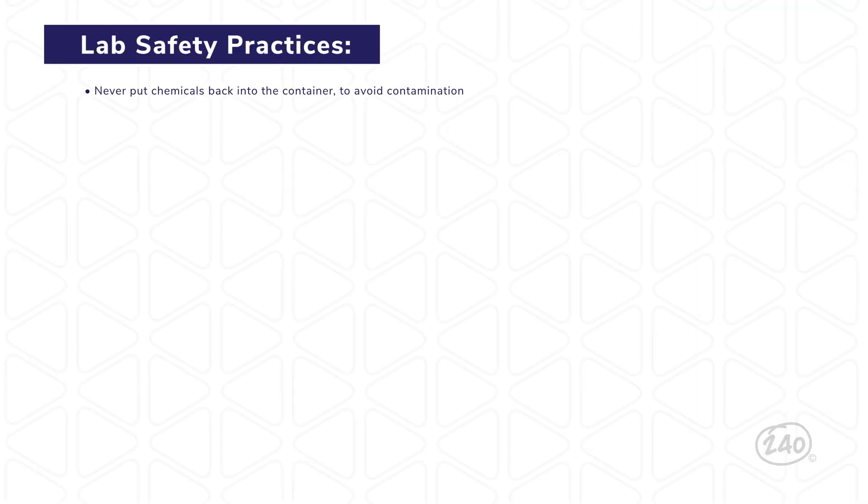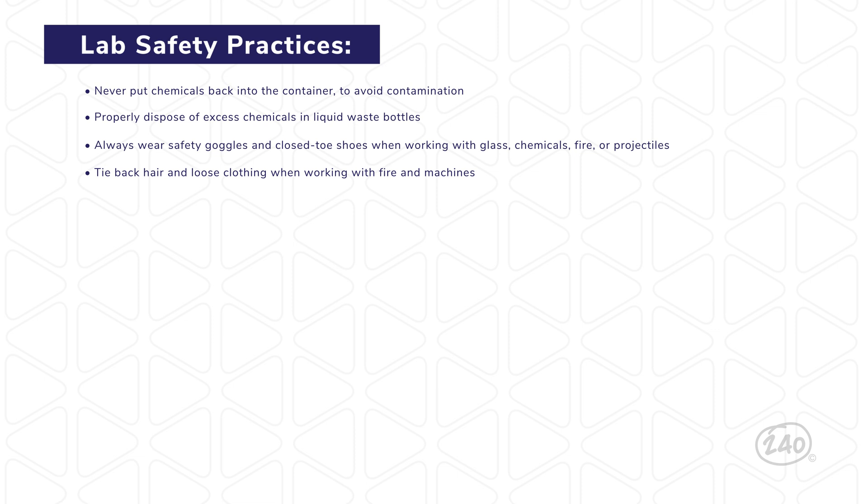Never put chemicals back into the container to avoid contamination. Properly dispose of excess chemicals in liquid waste bottles. Always wear safety goggles and closed-toe shoes when working with glass, chemicals, fire or projectiles. Tie back hair and loose clothing when working with fire and machines. Wash hands before and after experiments. Direct the openings of containers away from faces. Never use or touch chipped or broken glass directly. Do not eat or drink in the lab.